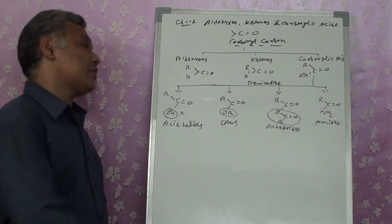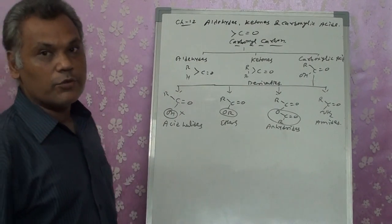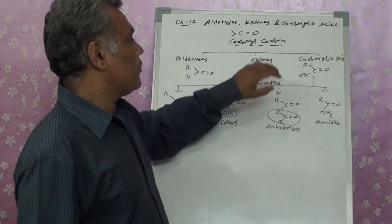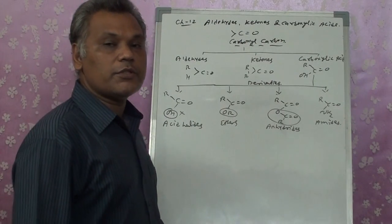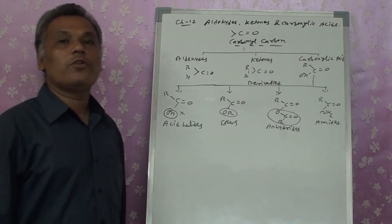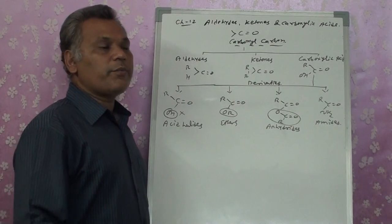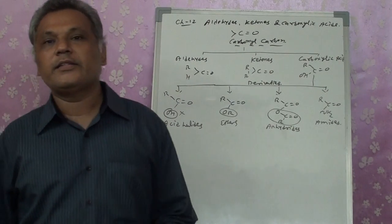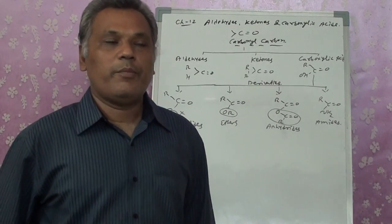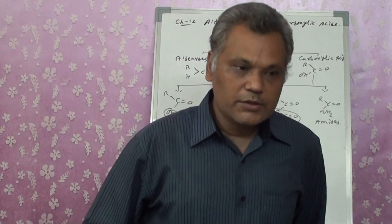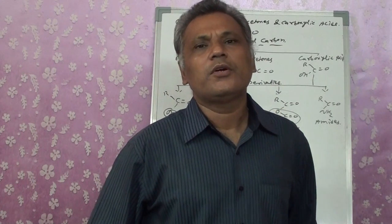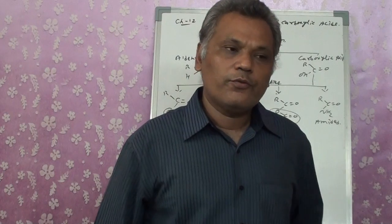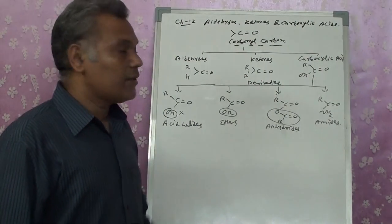The chapter will cover aldehydes, ketones, and carboxylic acid. Aldehydes and ketones are functional group isomers of each other, and their chemical properties and preparation methods are almost the same. That is why aldehydes and ketones will be studied together — covering IUPAC nomenclature, preparation, physical properties, and chemical properties — and then we will move on to carboxylic acid and its derivatives.